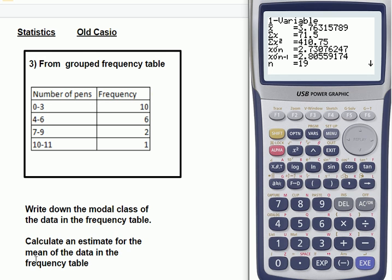It does say about modal class. It's not really a calculated thing. That just means which class, and for class, think group, has the highest frequency. And that's 10, the highest frequency, so the answer will be 0 to 3, exactly as it looks.